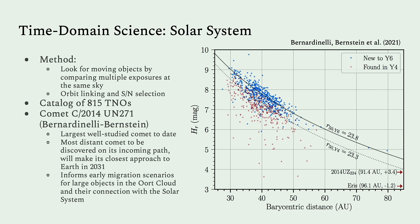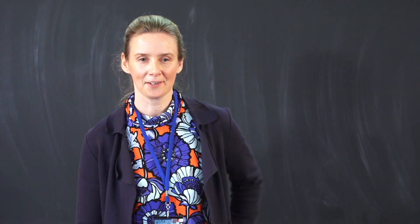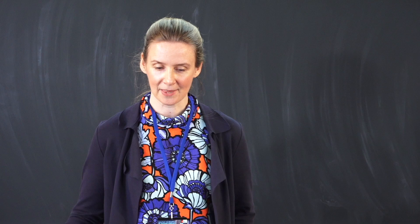The other time domain science case in DES is solar system science, where we look for moving objects by comparing multiple exposures and then link their orbits. This led to a catalogue of 815 trans-Neptunian objects — one of the largest to date. Beyond trans-Neptunian objects, you can also detect comets in the dataset, including one that is the largest well-sighted comet to date, being used to inform early migration scenarios of how large objects in the Oort Cloud relate to the solar system.